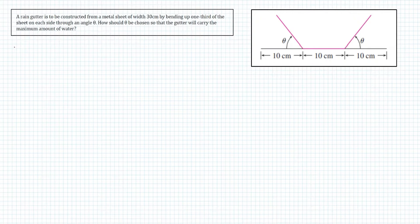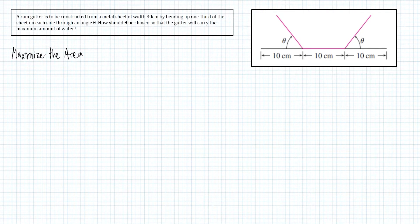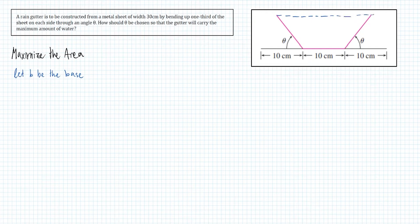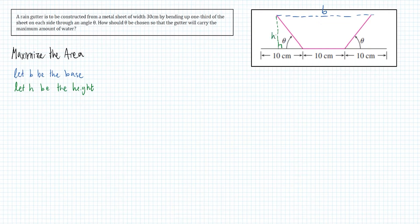For this problem, a rain gutter is going to be constructed from a 30 centimeter sheet by bending up a third on each side at an angle of theta. This is the same as maximizing the area of a cross-section diagram that we have to the right. If we let b be the base of the shape of the cross section, and we let h be the height of this shape, we set up some restrictions for these variables.